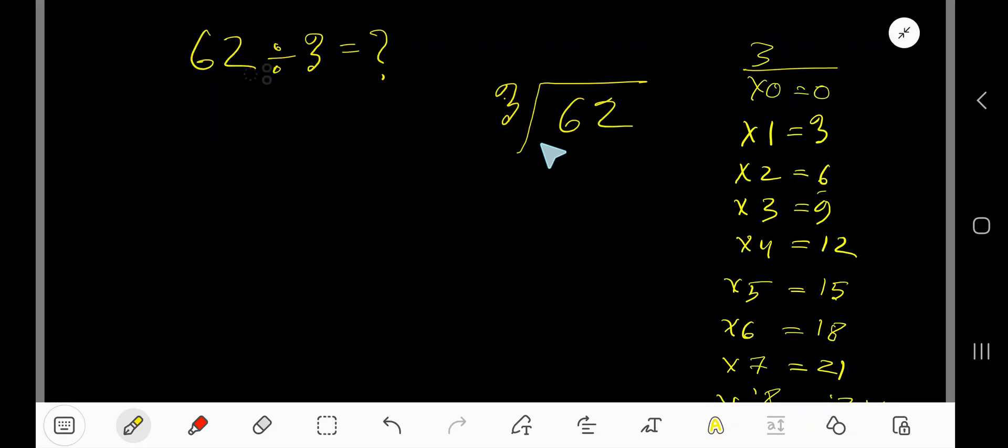62 divided by 3. Here 3 is a divisor, so we need the multiplication table of 3. 3 times 0 is 0, 3 times 1 is 3, 3 times 2 is 6, 3 times 3 is 9, 3 times 4 is 12, 3 times 5 is 15.